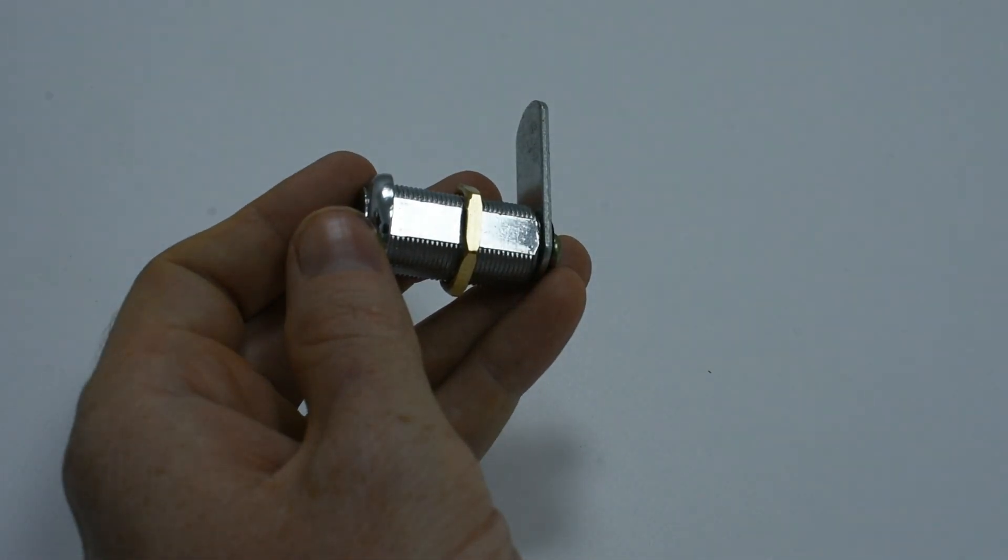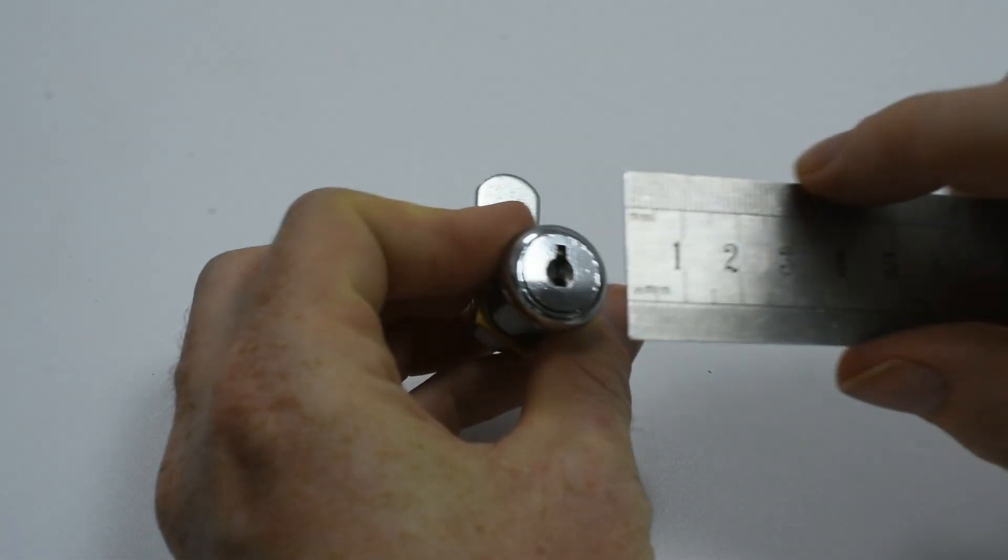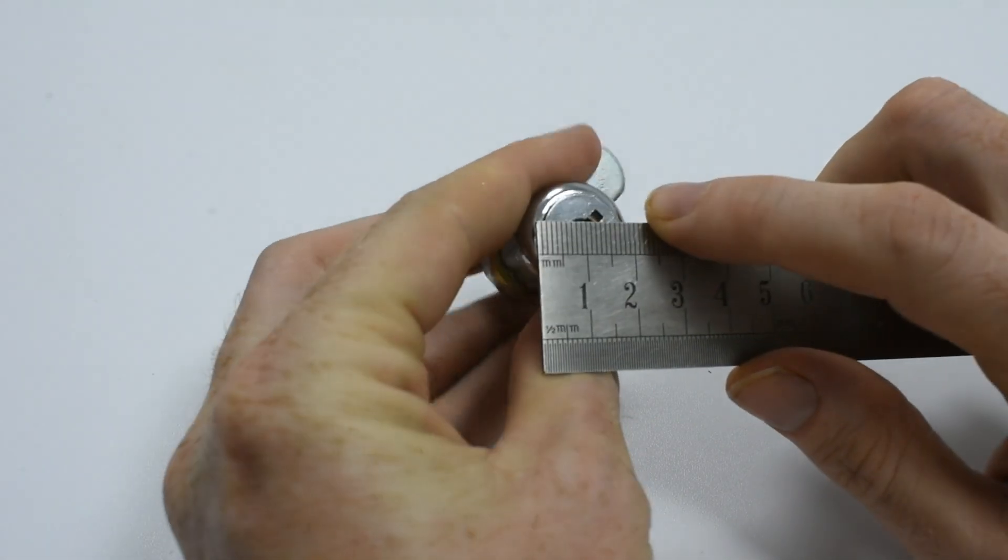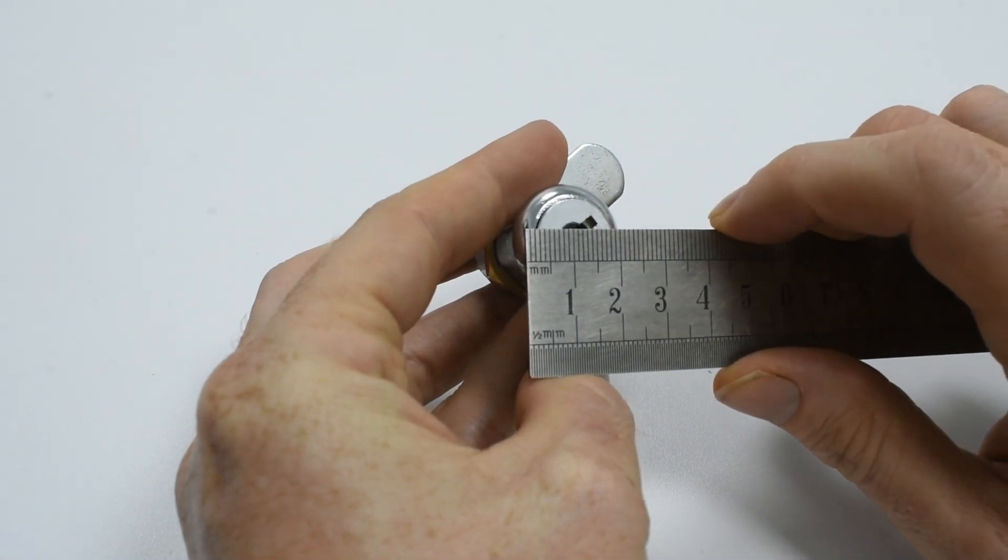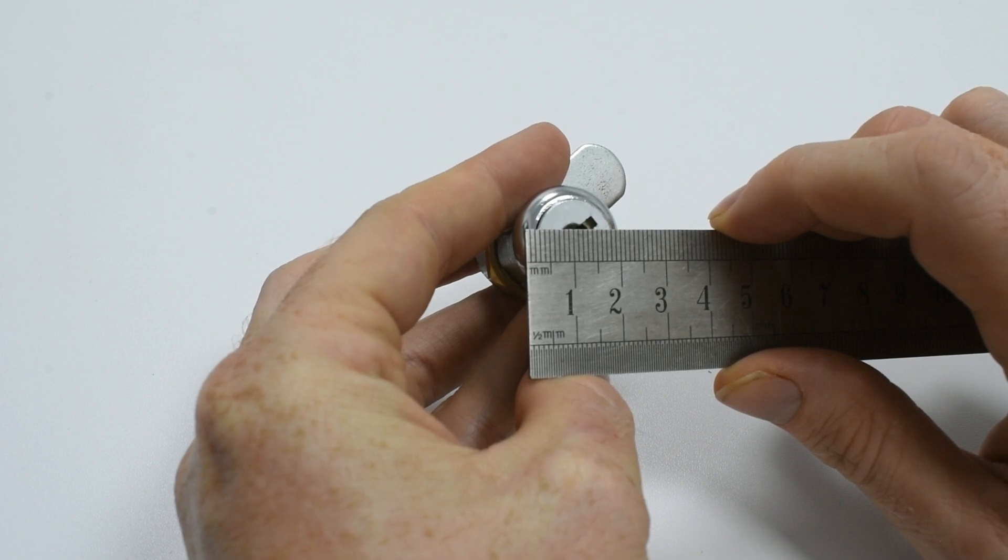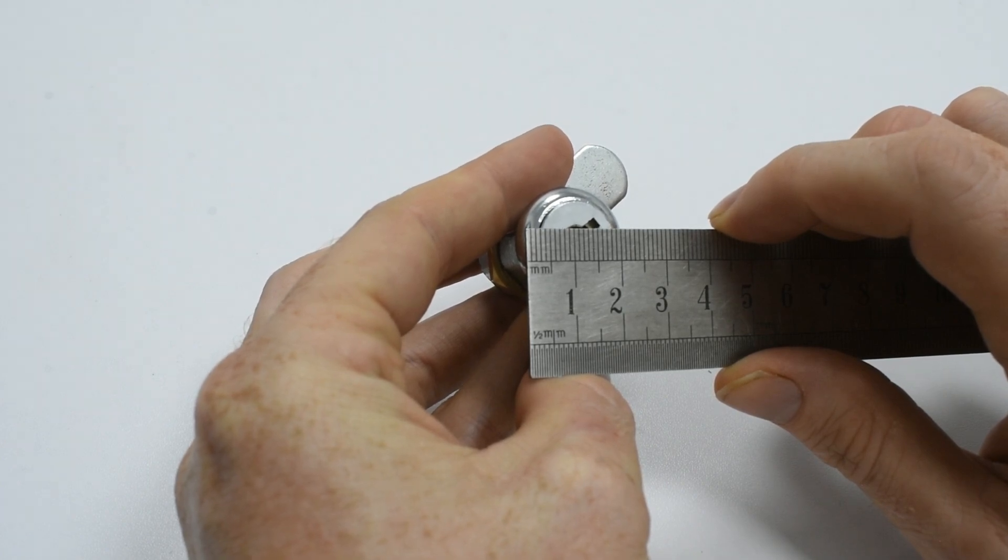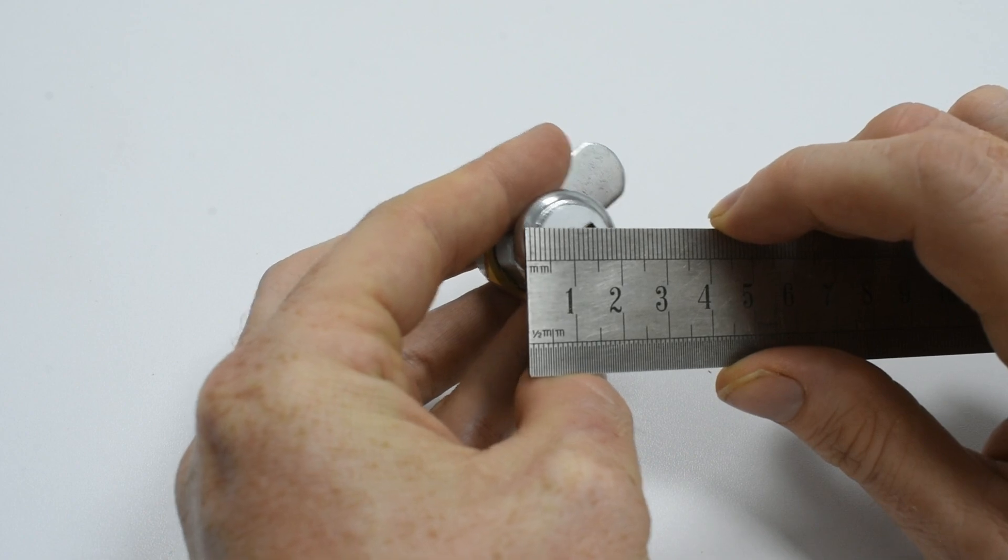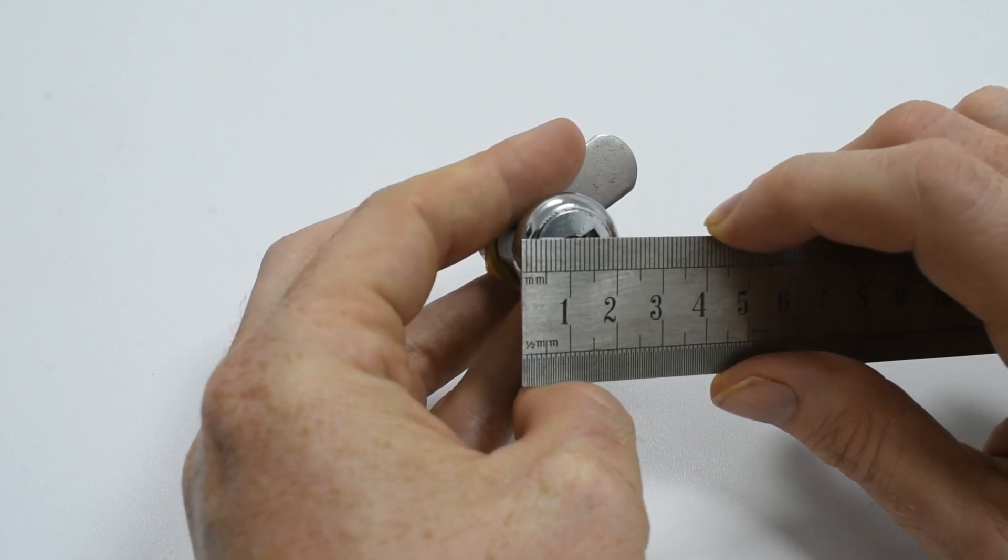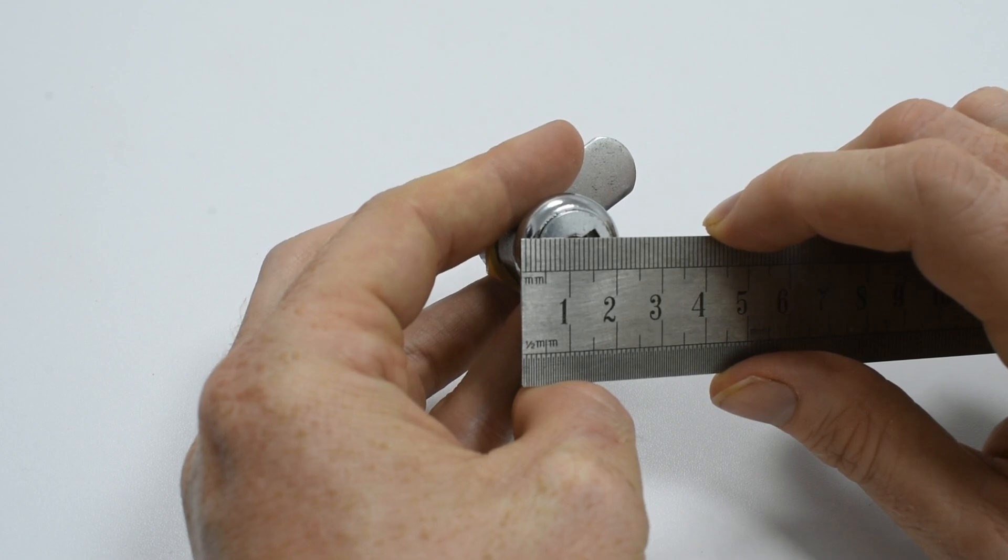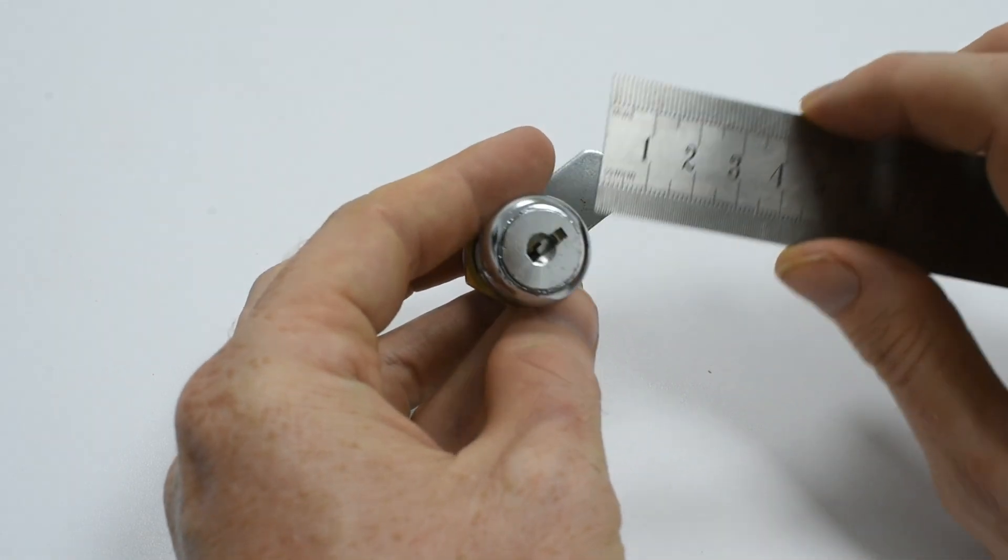The next measurement required will be the face diameter. As the name suggests, this is a measurement across the face of the cam lock at its widest point. In this case, that would measure approximately 24 or 25 millimeters. This is officially quoted as being 24.7 millimeters in the case of this cam lock.